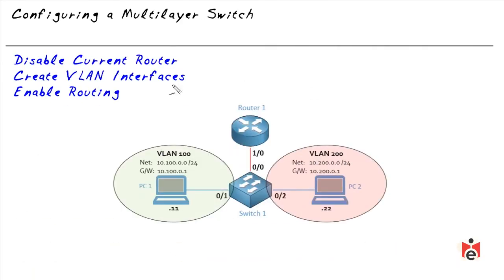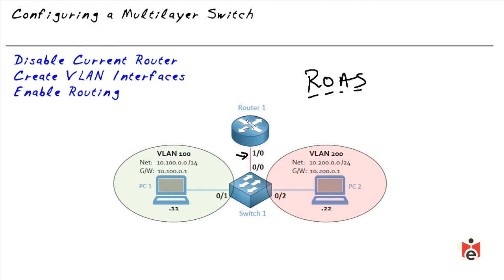We begin with a topology often referred to as ROAS — Router on a Stick — because the router connects to the switch with a single cable like a stick. Behind the scenes, this is a trunk between the router and switch, and the router has logical interfaces for VLAN 100 and VLAN 200. Currently this router is doing the routing back and forth between the two subnets.